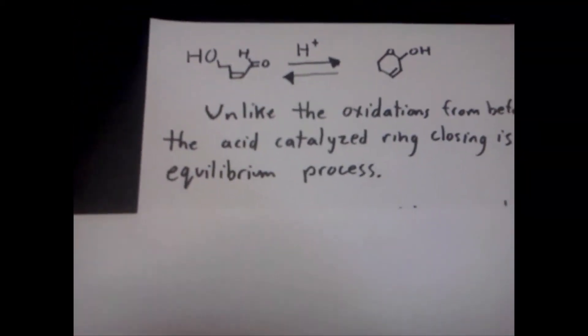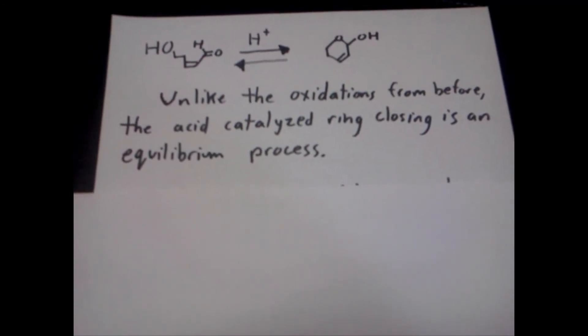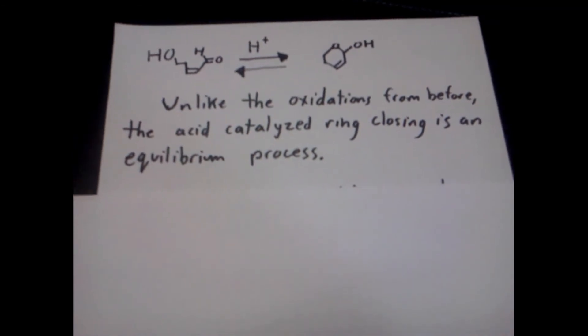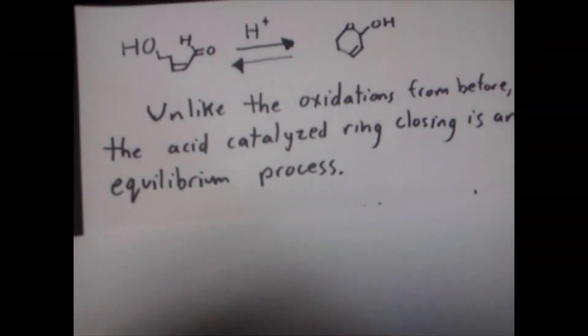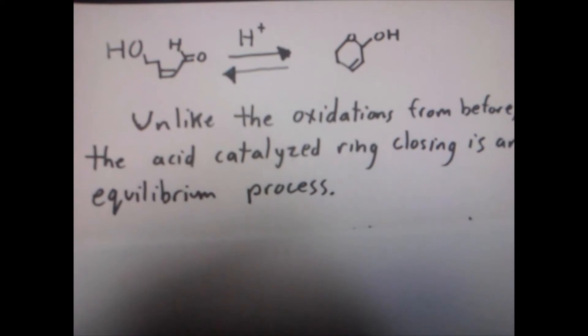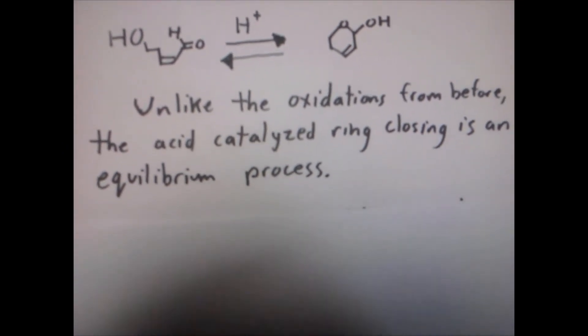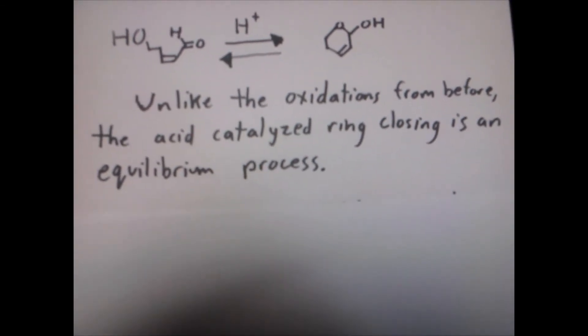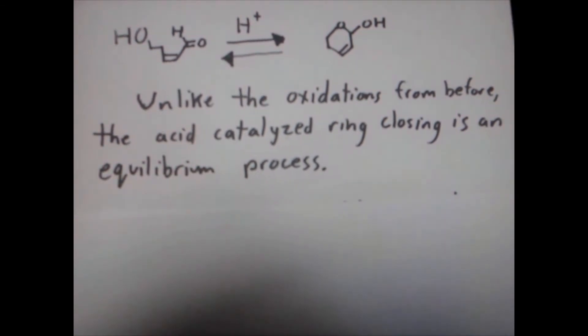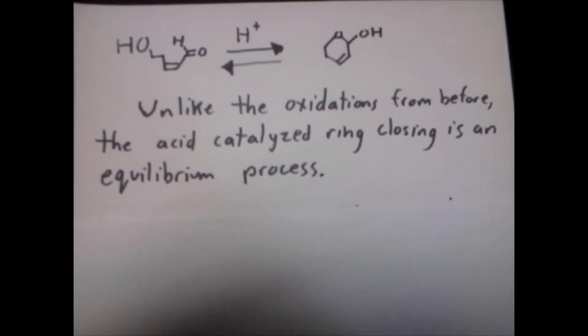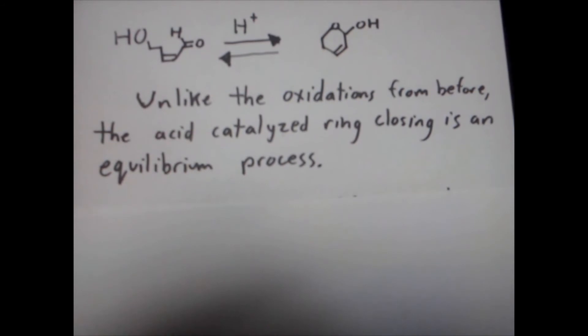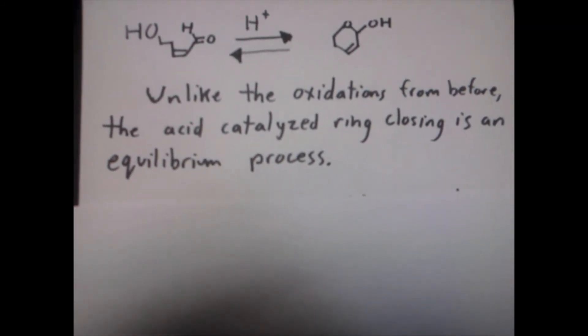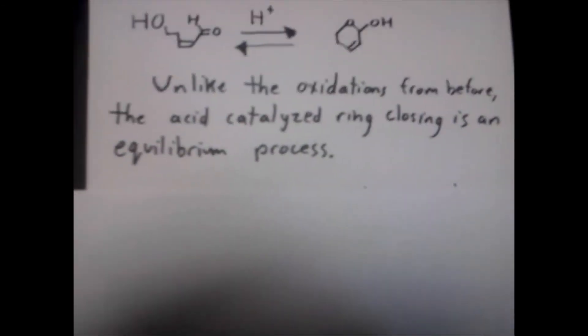So we're going to show the fruits of our labor. Unlike the oxidations from before, the acid-catalyzed ring closing is an equilibrium process. So when we finally form our lactol product, we're not just going to be sitting with nothing but lactol. We're also going to have starting reactant in that solution because they are converting between each other constantly. If you take an IR spectrum or an NMR spectrum of these, you are going to get signs of both of them. And if you know anything about sugar chemistry, then you'll know that that is a very common thing to happen because D-glucose can both be cyclic or it can be in its long chain form.